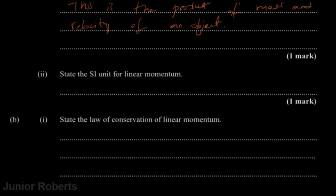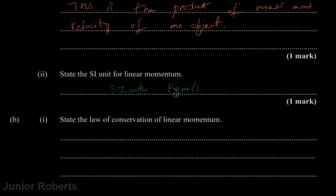Next, we need to state the SI unit for linear momentum. The SI unit for momentum is kilogram meters per second. Since we're multiplying mass and velocity, the SI unit for mass is kilogram and the SI unit for velocity is meters per second. It can also be written as newton-seconds. Any one of these would be the correct unit.